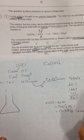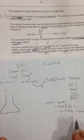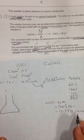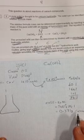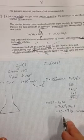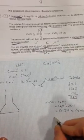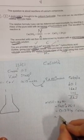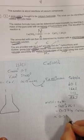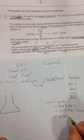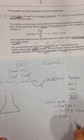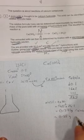But we want the hydrochloric acid to be in excess, so therefore why not weigh out about 0.35 grams of the calcium hydroxide.